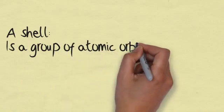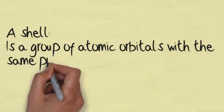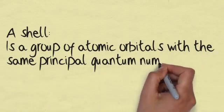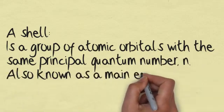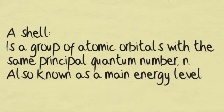A shell is a group of atomic orbitals with the same principal quantum number, n. This is also known as a main energy level.